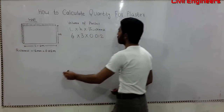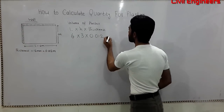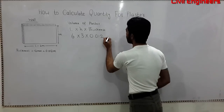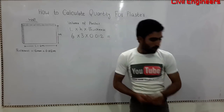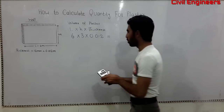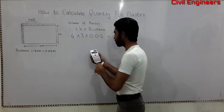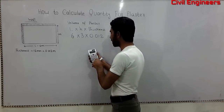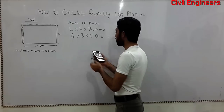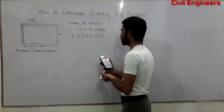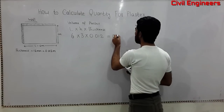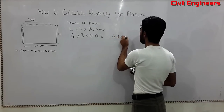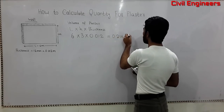So let's find out the volume for the plaster: 6 multiplied by 3 multiplied by 0.012 equals 0.216 cubic meters. This is the volume for the plaster.